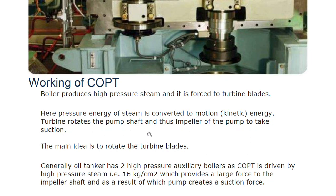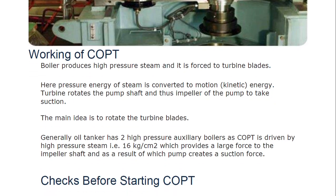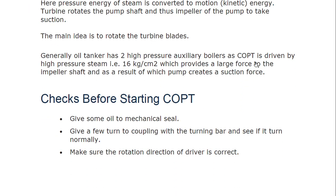The turbine rotates the pump shaft and thus the impeller of the pump to create suction. The sequence is: pressure energy converts to kinetic energy, the turbine rotates, the shaft rotates, the impeller rotates, which creates suction. The high pressure steam at 16 kg per centimeter square provides a large force to the impeller shaft, and as a result the pump creates a suction force.